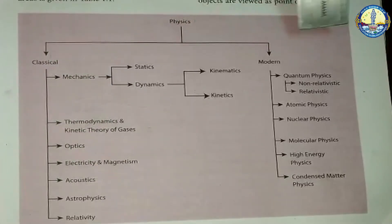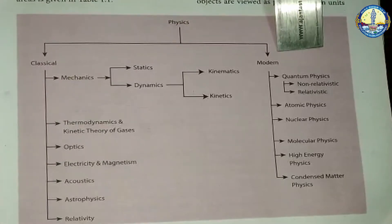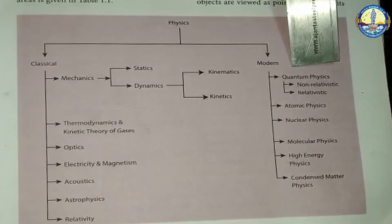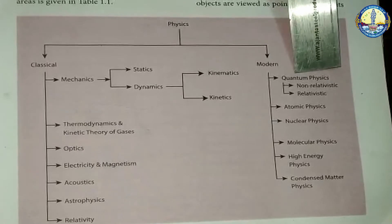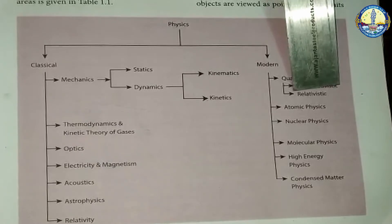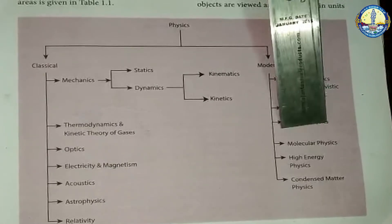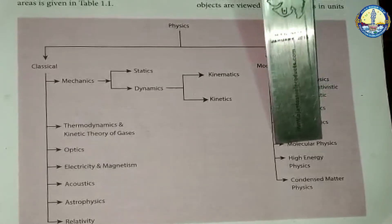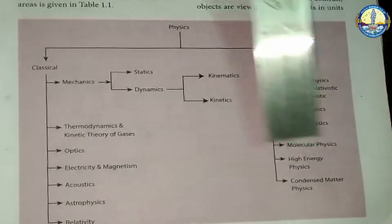Modern physics includes quantum physics, which is divided into non-relativistic and relativistic types, as well as atomic physics, nuclear physics, molecular physics, high energy physics, and condensed matter physics.